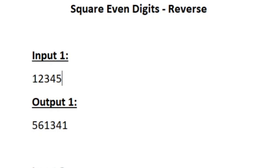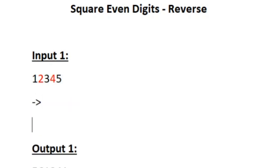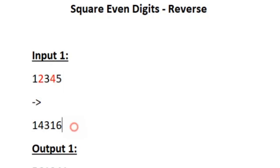The even digits present in the integer n are 2 and 4. The remaining digits 1, 3, and 5 are odd digits. We have to square all the even digits. The first digit 1 is odd so it remains as such. The digit 2 is even so 2 squared becomes 4. Then 3 is odd so it remains, and 4 is even so it becomes 16. The digit 5 is odd so 5 remains as such. This is how our integer looks after squaring all the even digits.